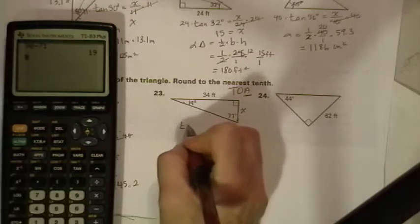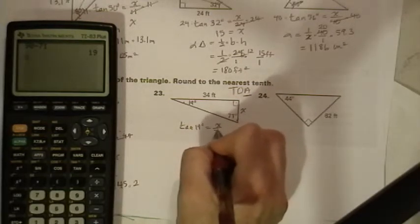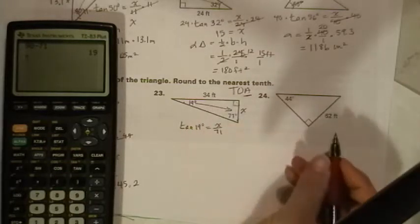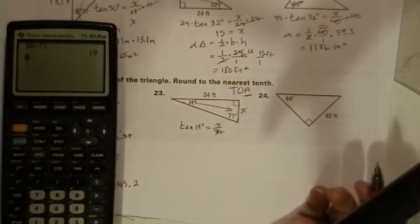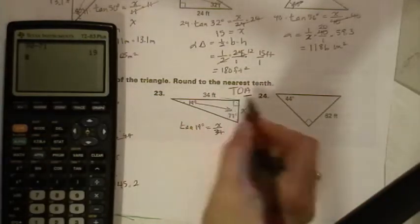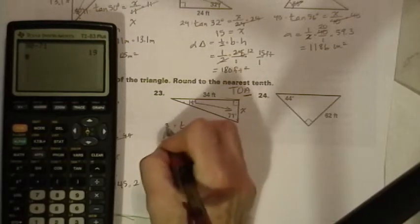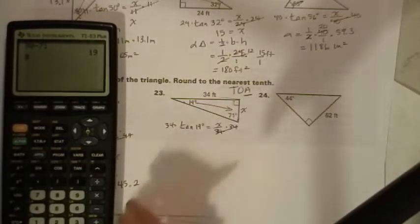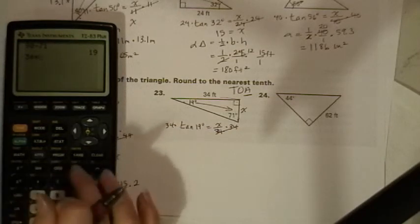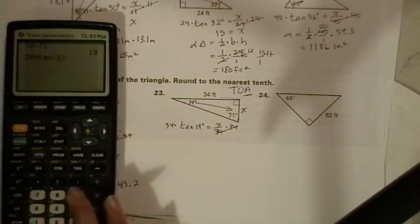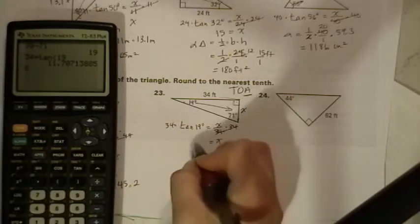So we're going to say the tangent of 19 degrees is equal to x over 71, because this is the opposite. Not 71, 34. Because that's the adjacent side. We're going to multiply both sides by 34 to get it out of the denominator. And we get 34 times tangent 19 equals